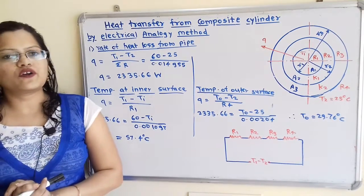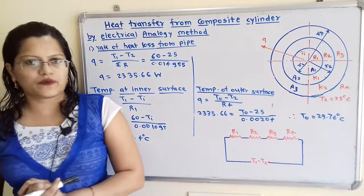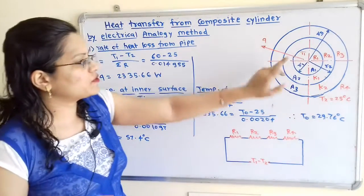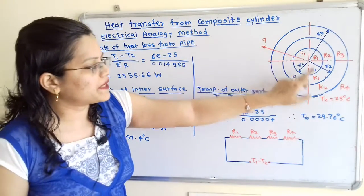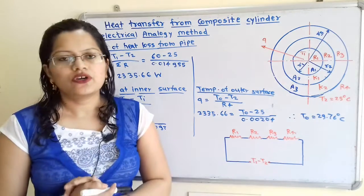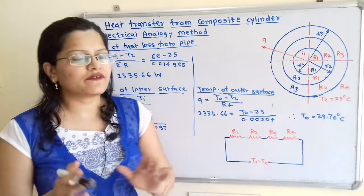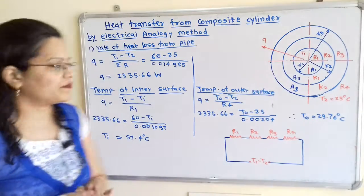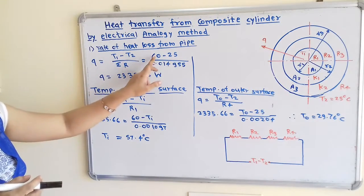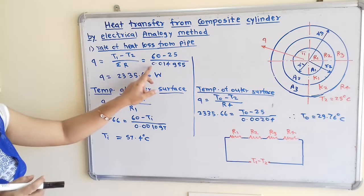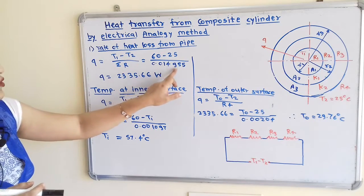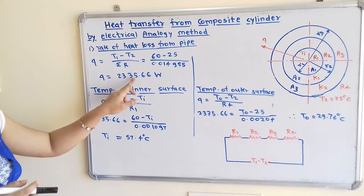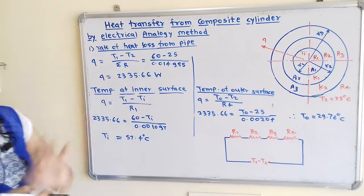The rate of heat loss is Q = (T1 − T2)/ΣR = (60 − 25)/0.014985 = 2335.66 W.